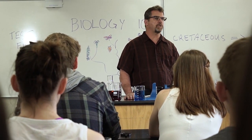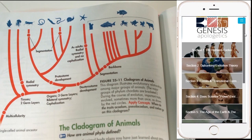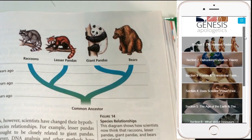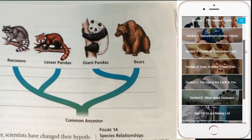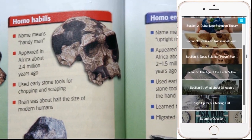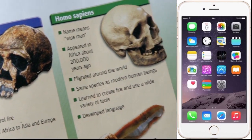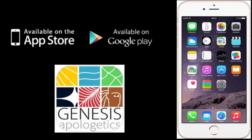Public school students receive over 250 pages of evolution teaching in most states. Our new mobile app will arm your student with biblically-based answers using short video clips that address the key pillars of evolution taught between 6th and 10th grades. Just download the Genesis Apologetics app from the iTunes or Google Play stores to equip your teen today.